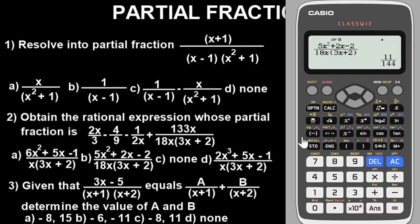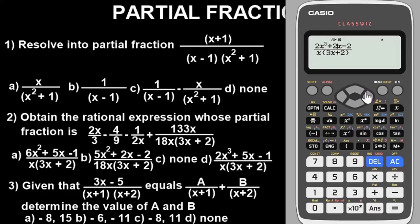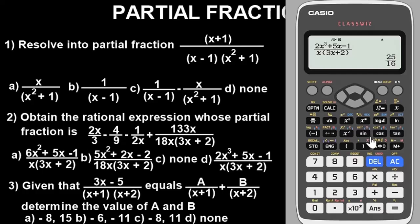Option C does not match, so we check option D. For option D, we remove the 18 from the denominator, adjust the powers and coefficients — changing 5 to 2 and 2 to 1 in the relevant positions. Press equals — confirmed: 25 over 16. So guys, our answer is option D. That's how you simplify the question and the options to obtain the exact value.